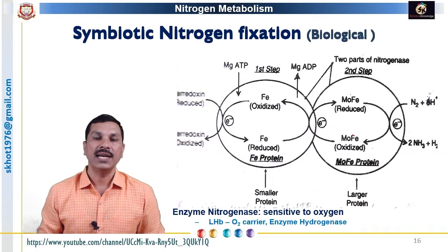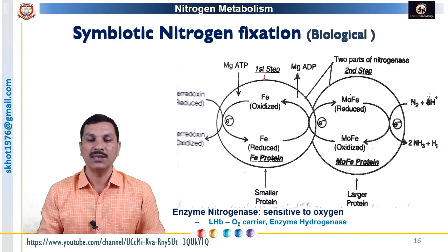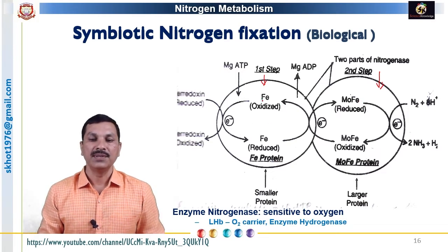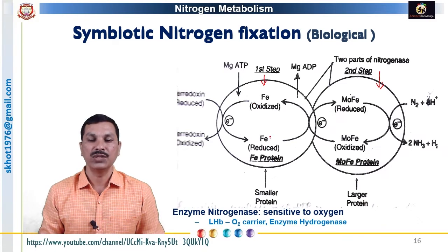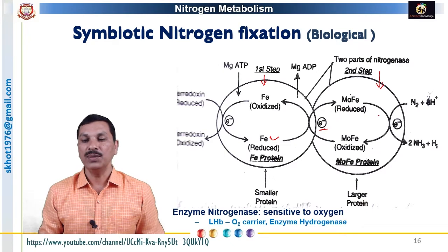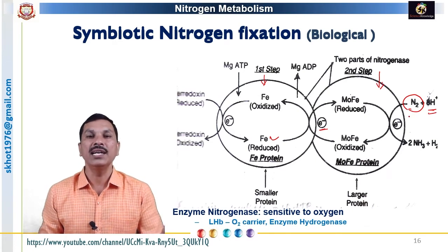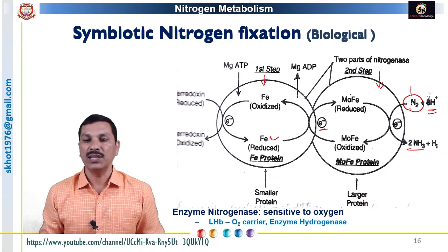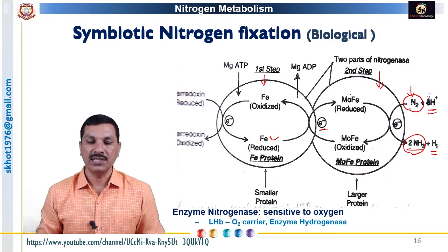Looking at the mechanism diagrammatically: the enzyme nitrogenase has a smaller subunit, dinitrogenase reductase, and the larger subunit, dinitrogenase. In the first step, reduced ferredoxin transfers electrons to the smaller subunit, and the iron molecule in this smaller subunit gets reduced. This reduced iron donates electrons to the MoFe protein — the larger subunit — where these electrons are used to reduce nitrogen gas. Nitrogen gas is then added with electrons and hydrogen, with the reducing power provided by NADPH2, and molecular nitrogen is converted into ammonia. One molecule of hydrogen is also evolved. Anaerobic conditions are created by leghemoglobin, and the excess hydrogen is taken up by the enzyme hydrogenase.